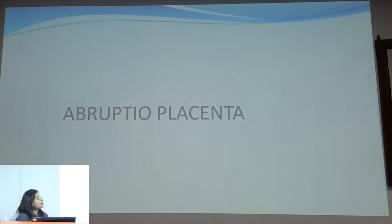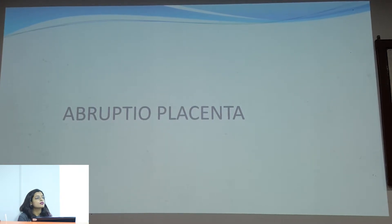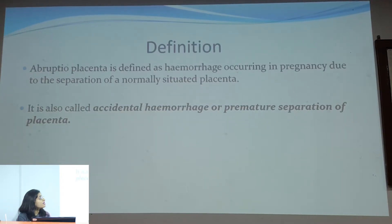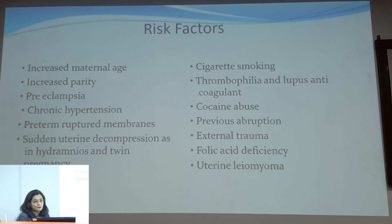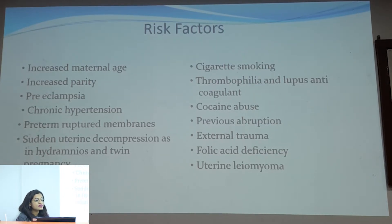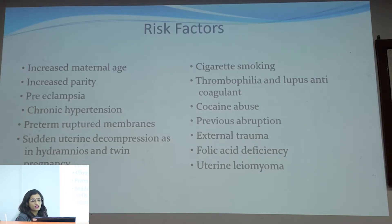The next topic is abruptio placentae. Abruptio placentae is the separation of the normally situated placenta from the uterus due to various causes. It is also known as accidental hemorrhage or premature separation of the placenta. Risk factors include increased maternal age, increased parity, sudden decompression of the uterus due to twin pregnancy, and hydramnios.